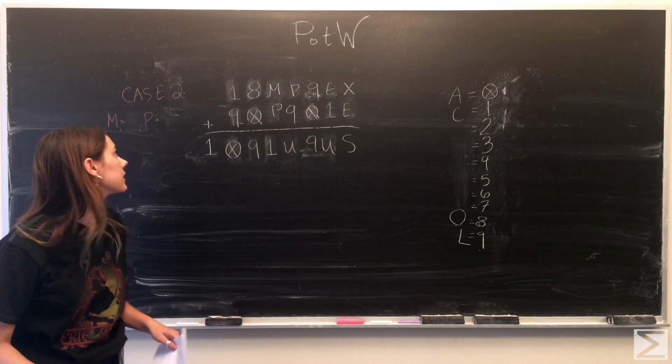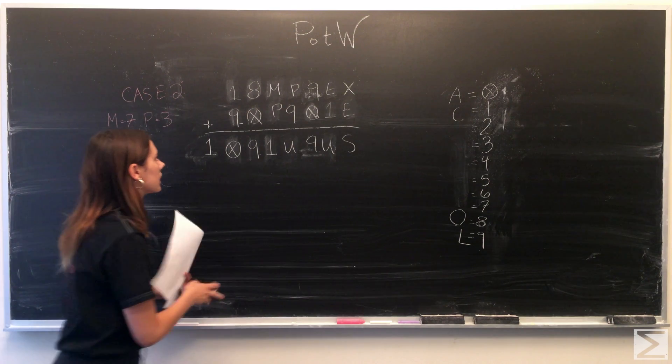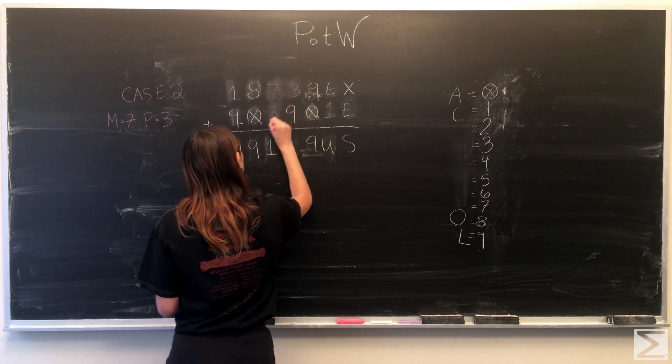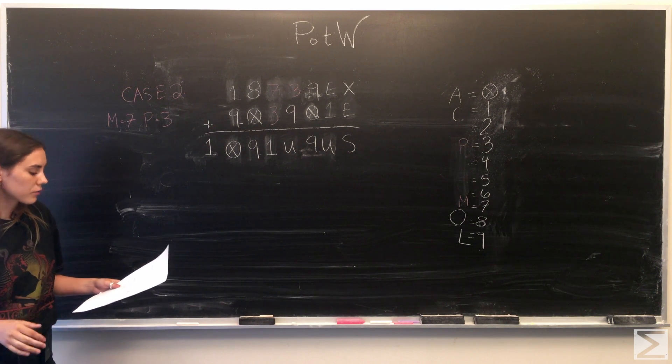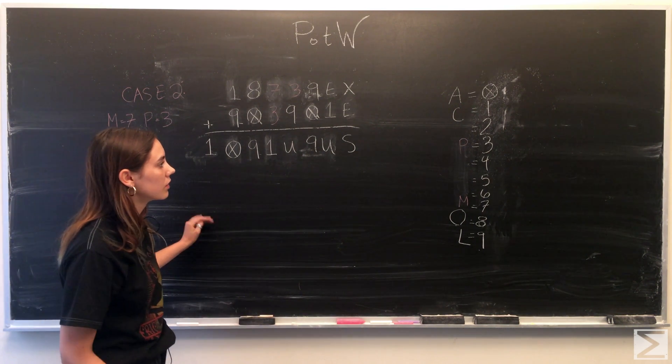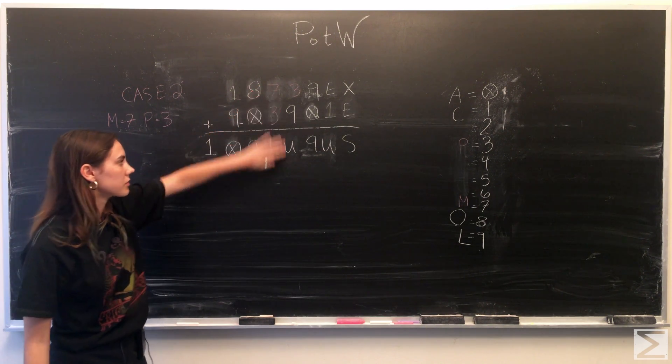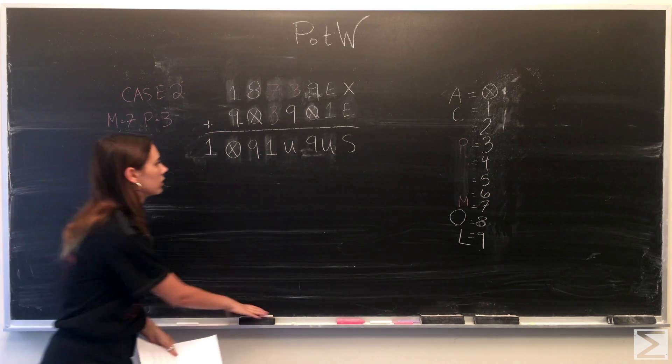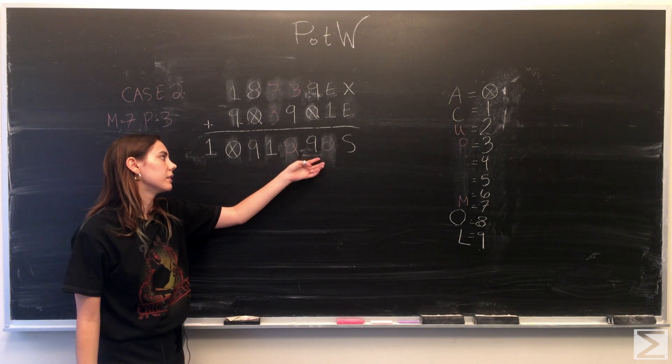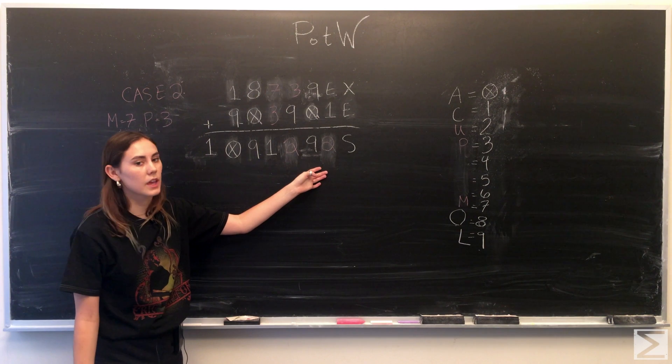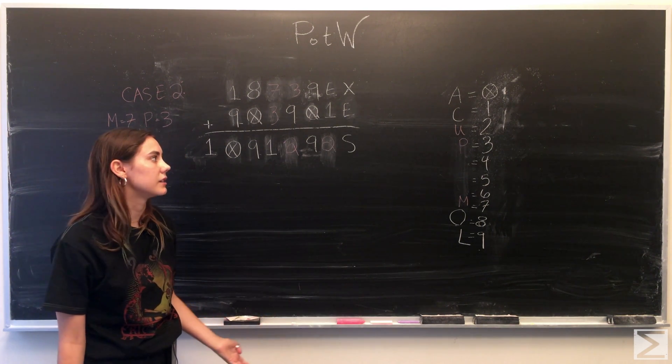Now we're going to move on to case 2, the case that M is equal to 7 and P is equal to 3. Looking at this now, you'll notice that by the rules of addition, U has to be 2. 3 plus 9 is equal to 12 and you carry the 1 over. Then looking at this equation, you'll notice that E therefore has to be either 1 or 0 in the case that a 1 gets carried over from the first column. Both of those cases would be impossible because we already know that A is equal to 0 and that C is equal to 1.